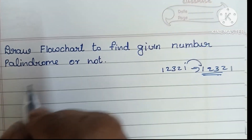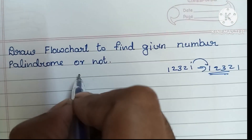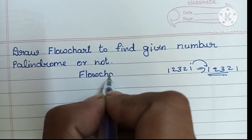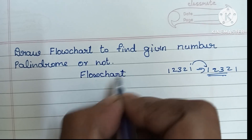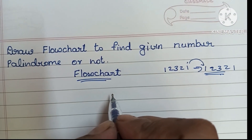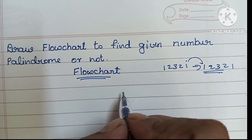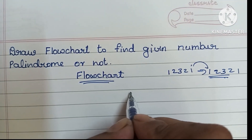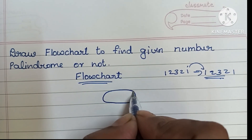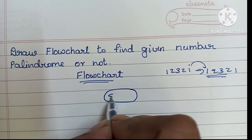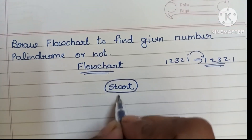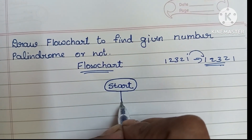So it is called a palindrome number. Here we're going to draw a flowchart. A flowchart is a graphical representation of a solved problem. A flowchart always starts with a start statement, which is written within an oval shape.